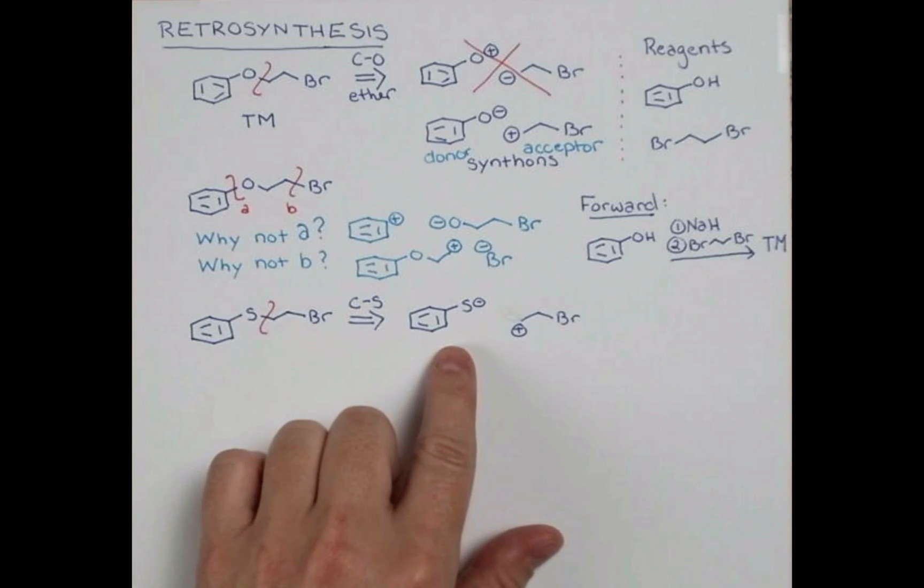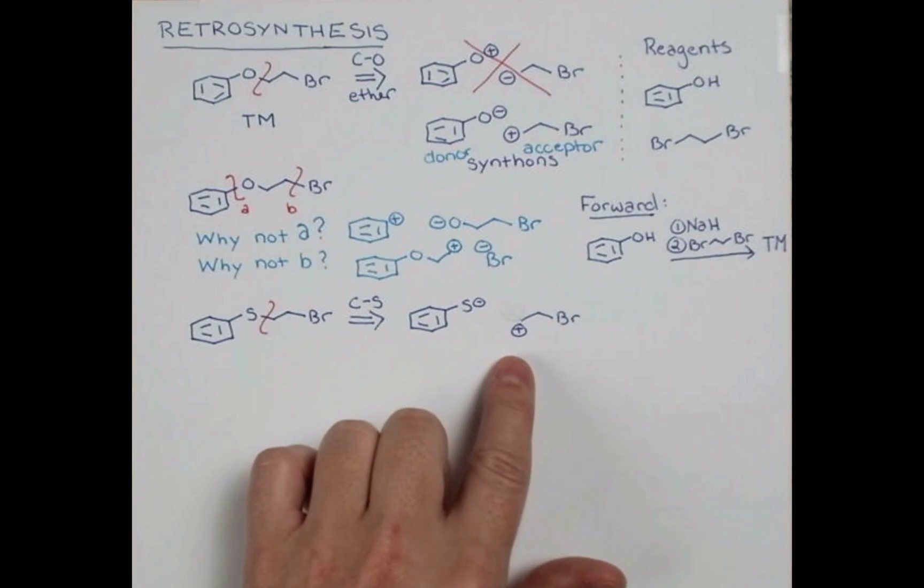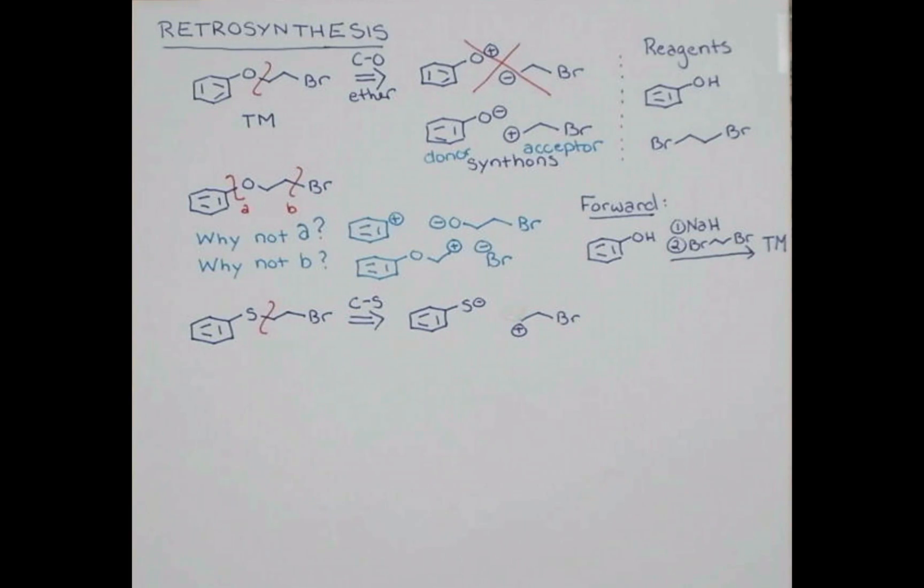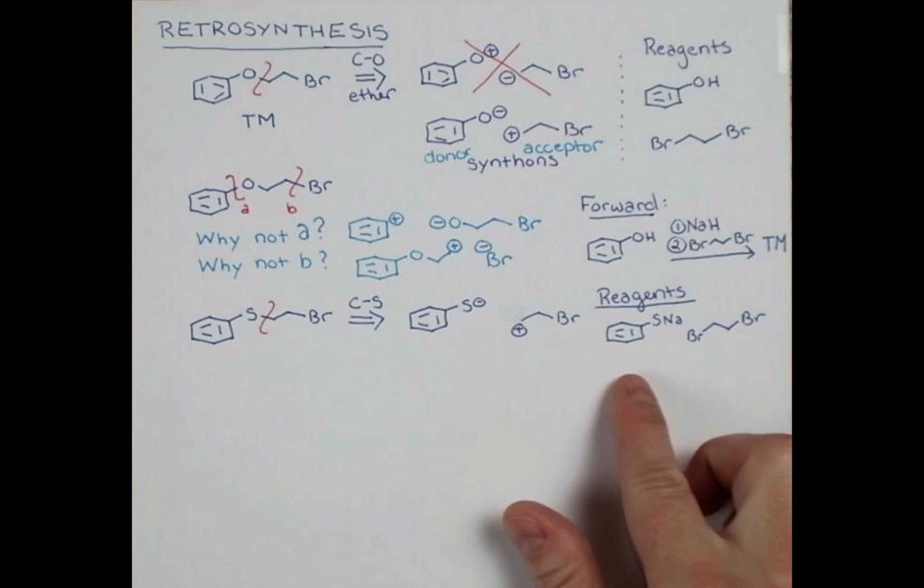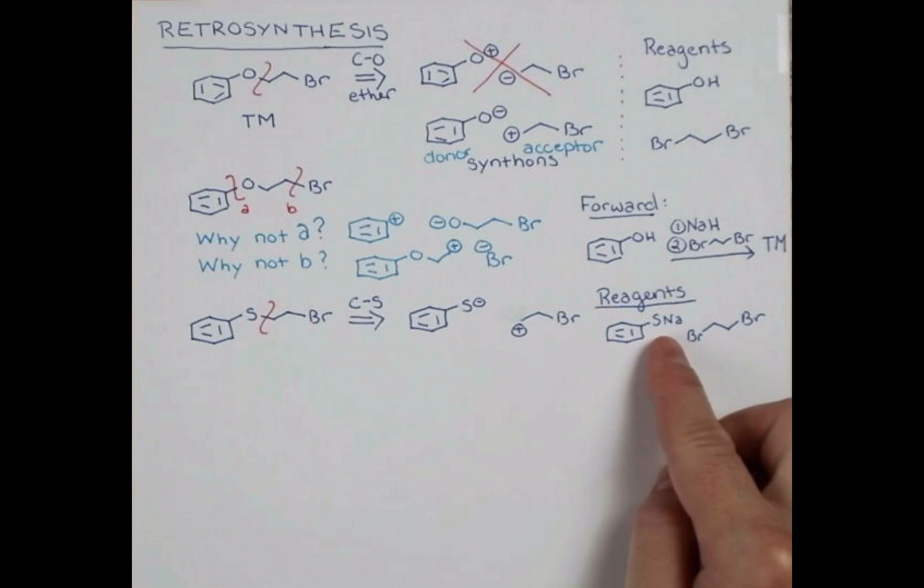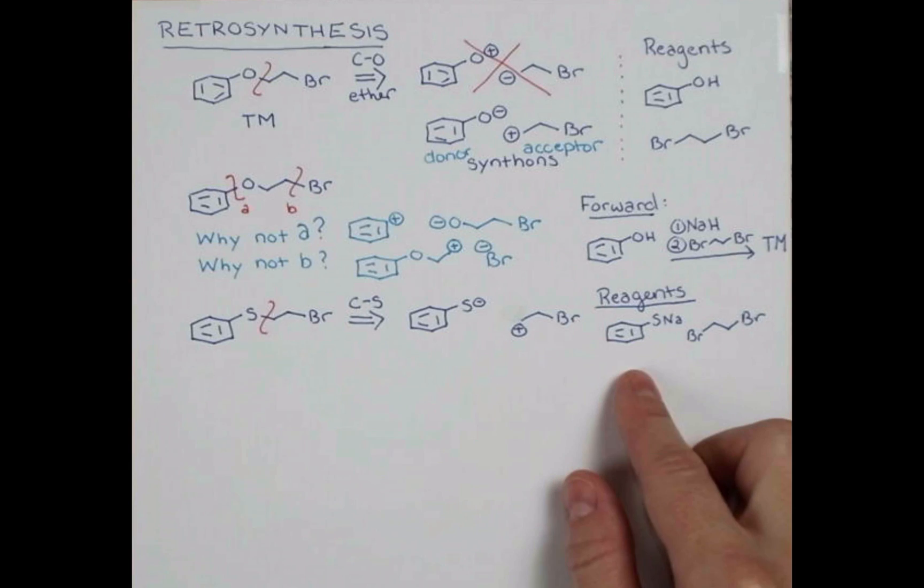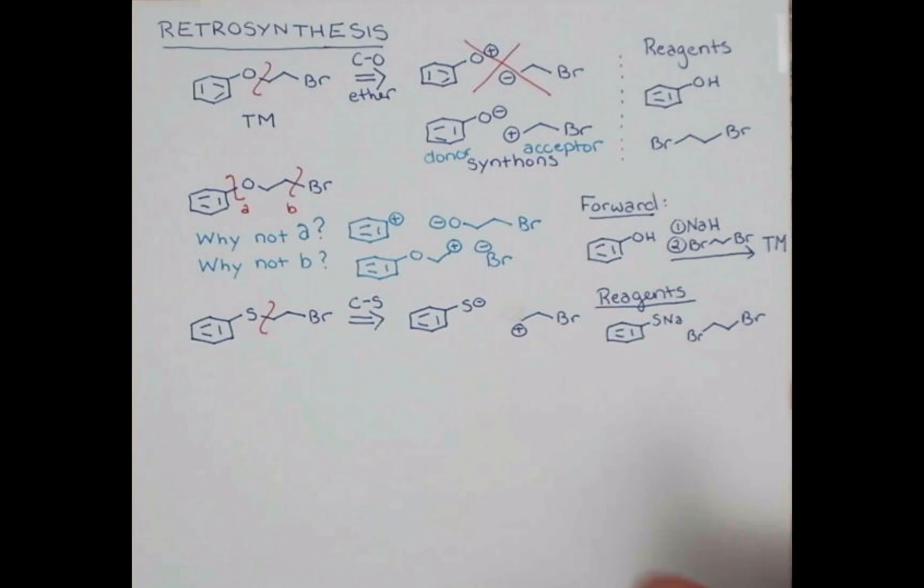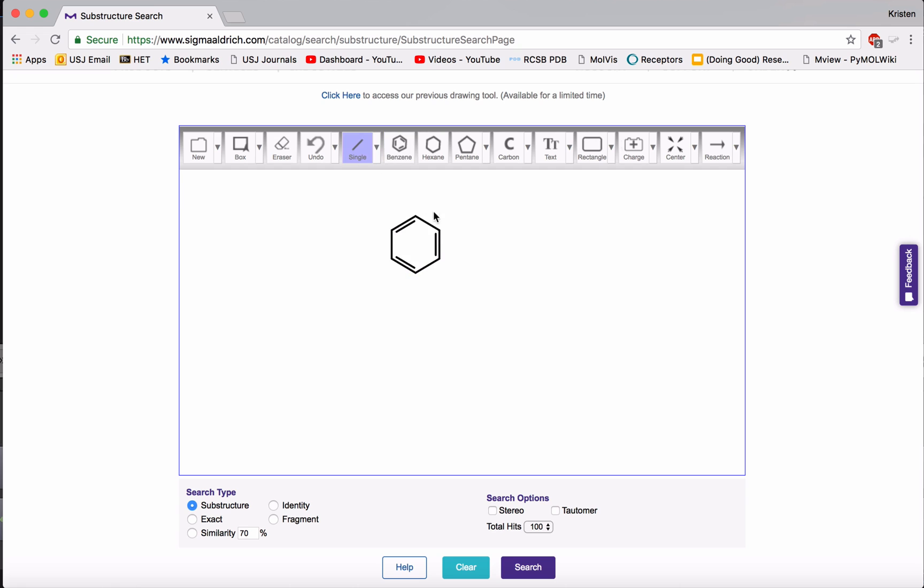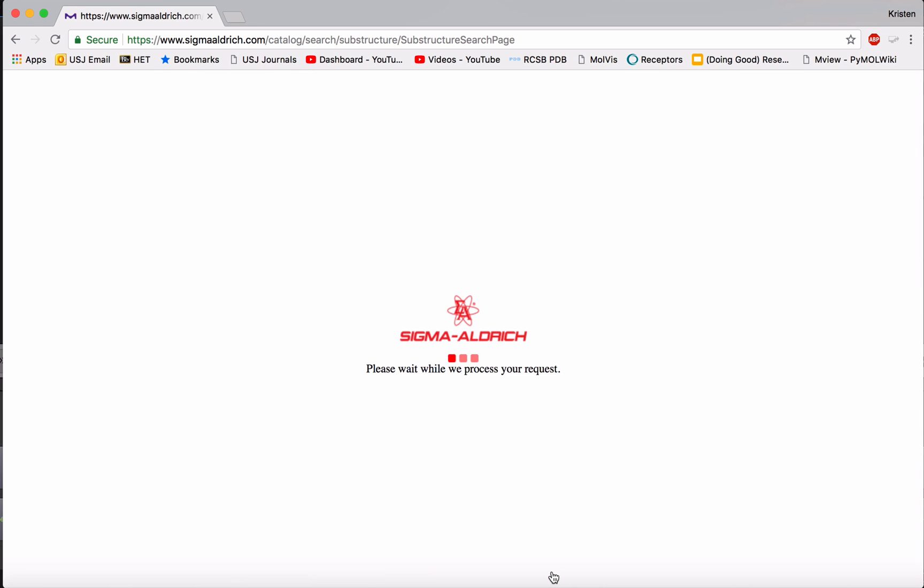Sulfur is a good nucleophile in SN2 reactions. So that has the negative charge. We have the same bromide. And so let's show what reagents we might be able to use. These are both commercially available compounds. We have the sodium salt of this thiophenol here. So this is an S minus Na plus. You can buy it as the salt from Sigma Aldrich. And it's useful. There's a webpage you can go to, the Sigma Aldrich structure search, which allows you to put in a structure and search for similar structures or that exact structure and see if you've gotten your synthesis back to commercially available compounds.